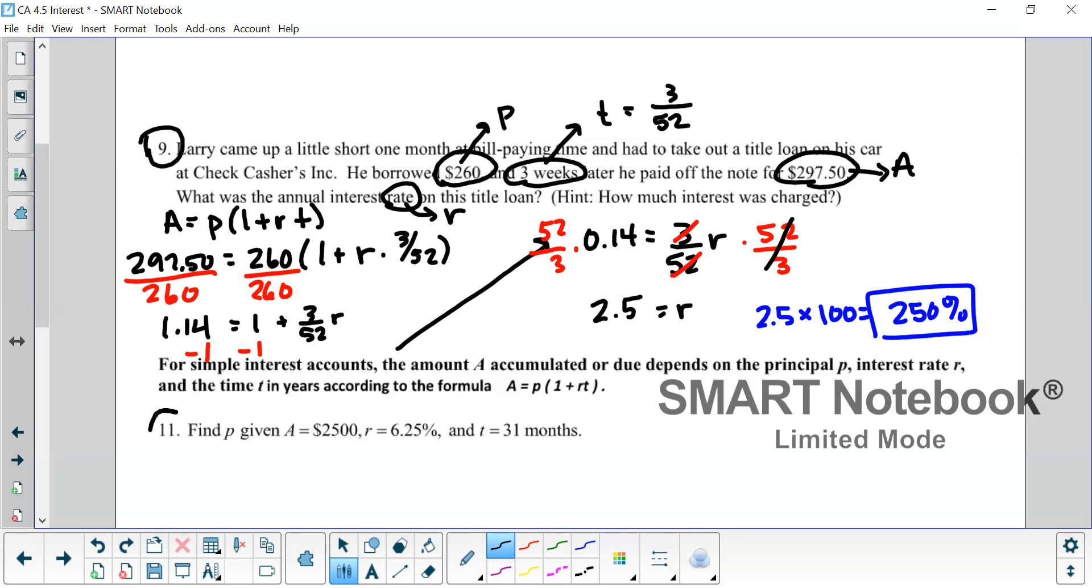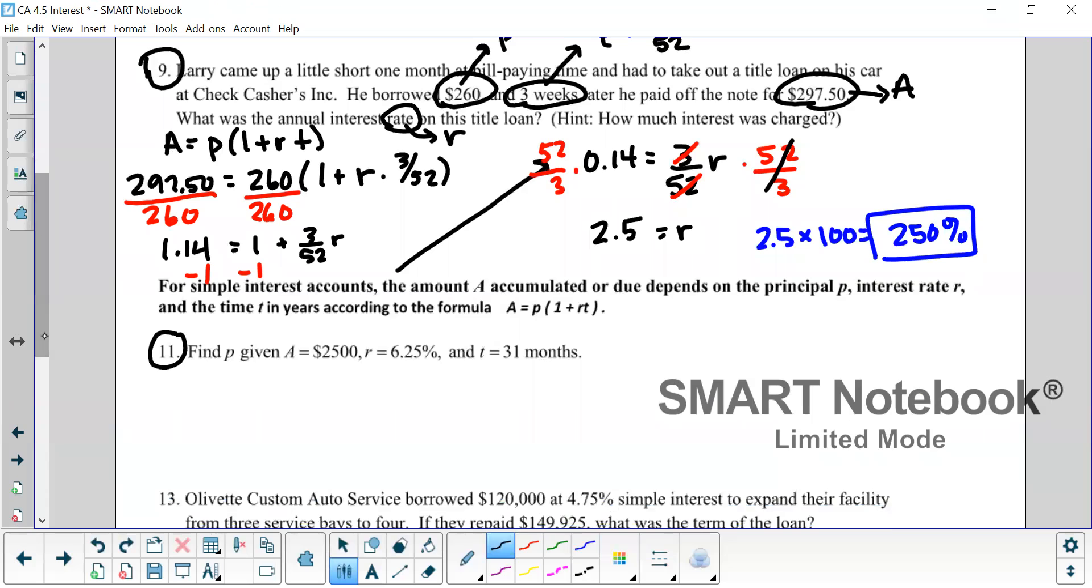And the next one we're going to try is number 11. This one's not a story problem. It's just you're given your values and you're going to plug it in and try and solve. And since it has an A in it, we're going to go ahead and use this A formula again. So take a minute, pause the video, try number 11 all by yourself, and then come back when you're ready.